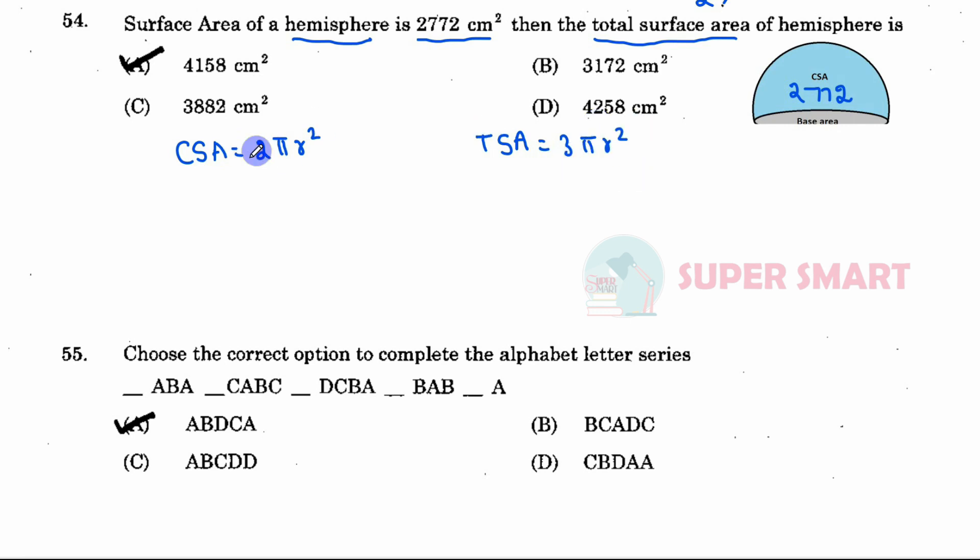To solve this, if the curved surface area equals 2772, then we have 2772 = 2πr². We need to solve for πr² by dividing. So this gives us 2772 divided by 2 equals πr².